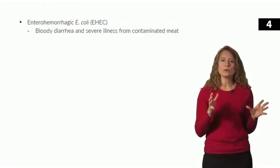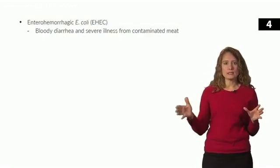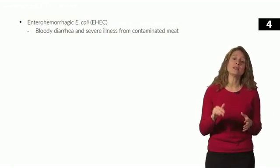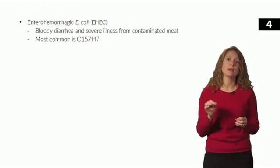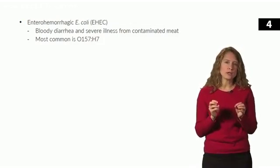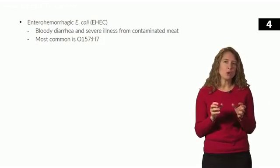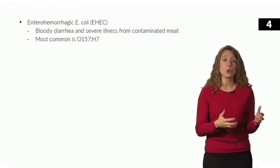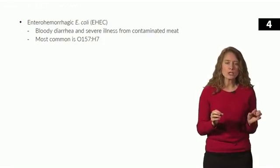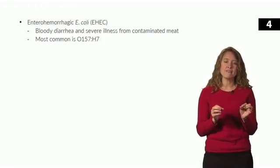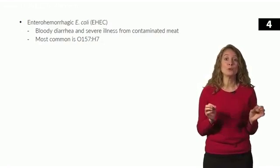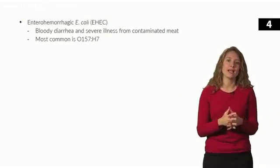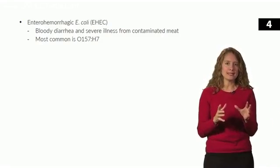Now let's move on to enterohemorrhagic E. coli, or EHEC. One of the most common types in the U.S. is O157:H7. The infective dose for enterotoxigenic E. coli is around 10 to the 8th or 10th organisms, but for enterohemorrhagic E. coli, the infective dose is only 10 to 100 organisms — just 10 bacteria — so you can see how easily this could be spread.